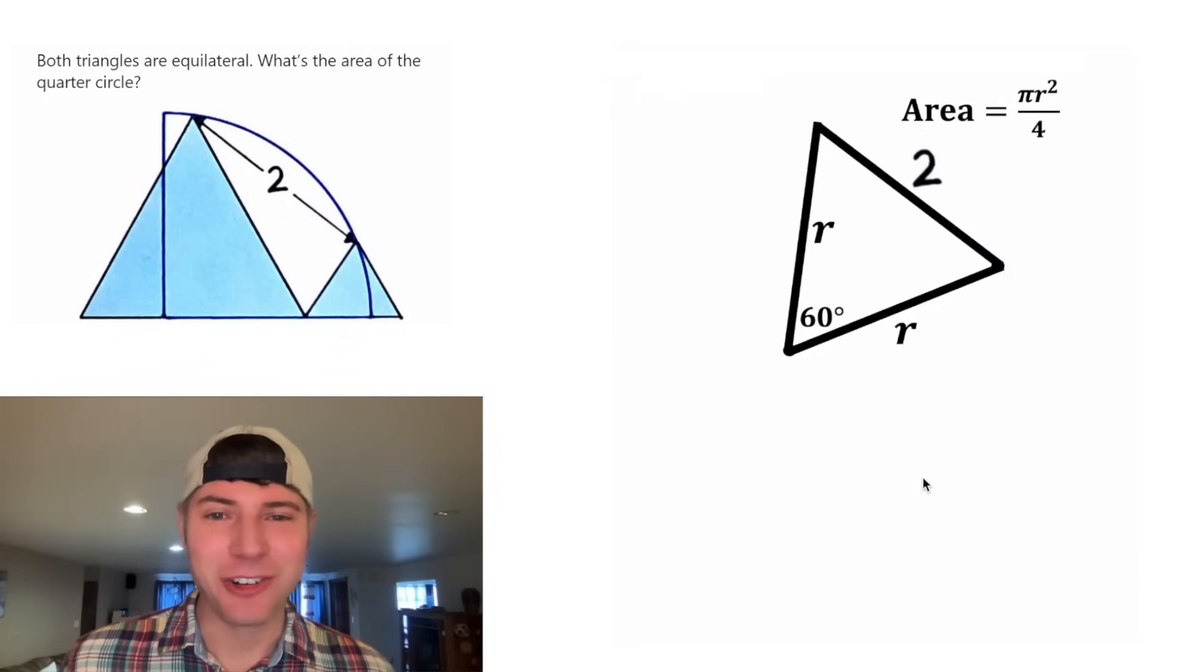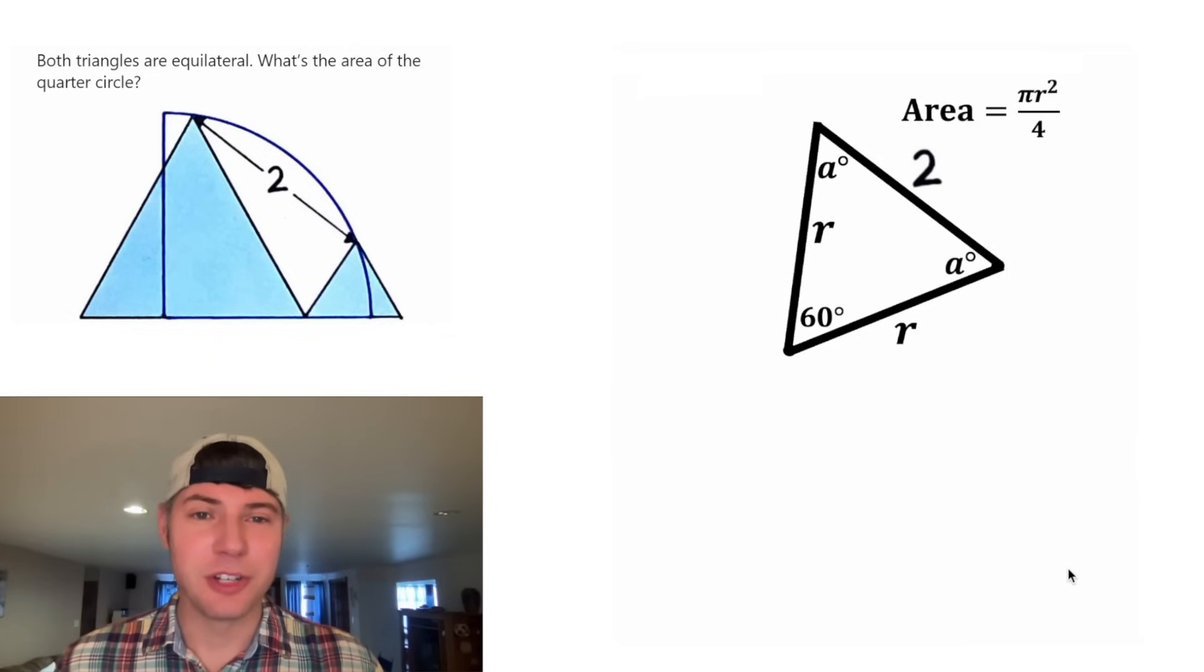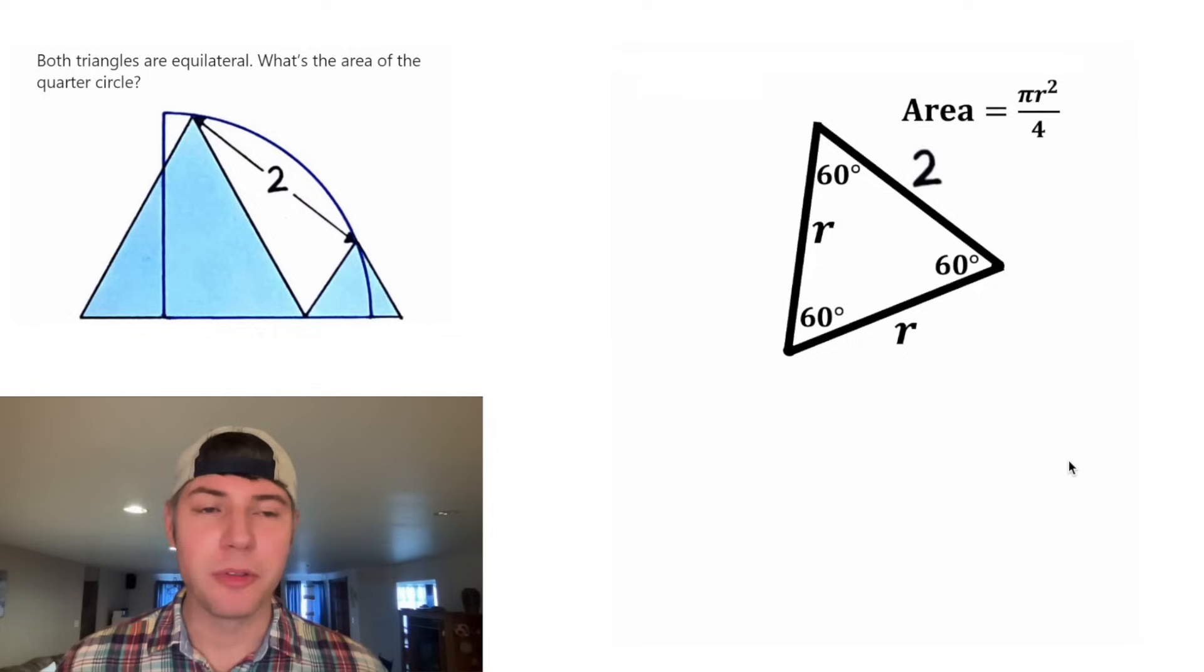Now let's focus on this triangle right here. Since these two sides are equal to each other, it is an isosceles triangle. And in every isosceles triangle, the base angles are congruent. So both these angles are equal to each other. Since every triangle has 180 degrees, this is only possible if both of those are 60 degrees.